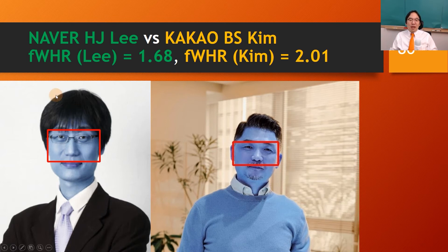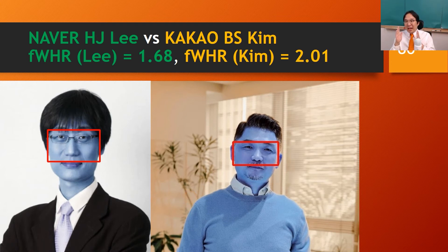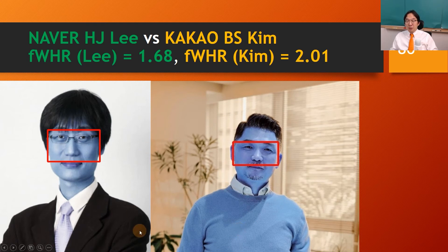Naver has been growing rather slowly over a 20-year horizon and is now number three or four in market cap. Whereas Kim Bonsu's Kakao has a short 10-year history but is now number three in market cap — they recently beat Naver. It has a lot to do with the founder's risk preference, which you can pretty much see by looking at his face.